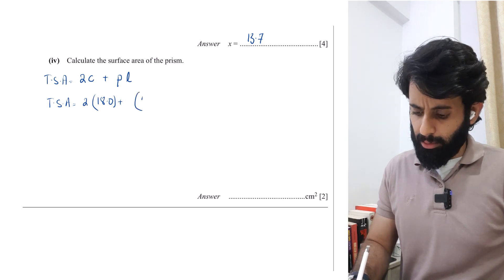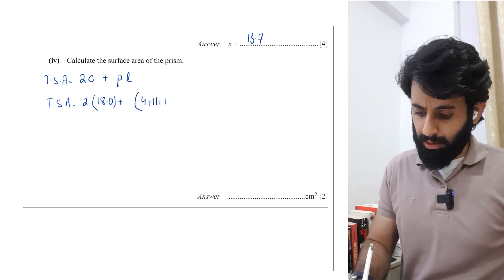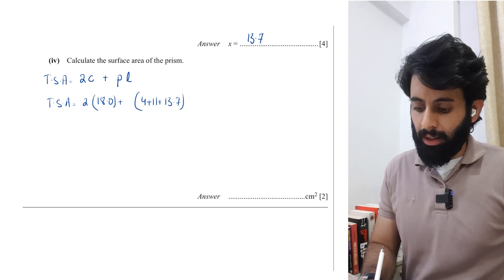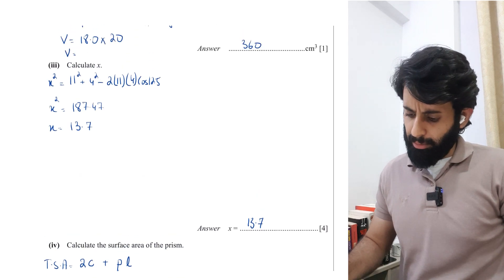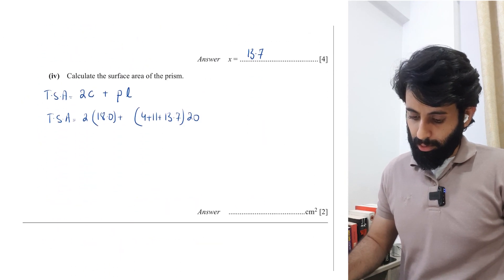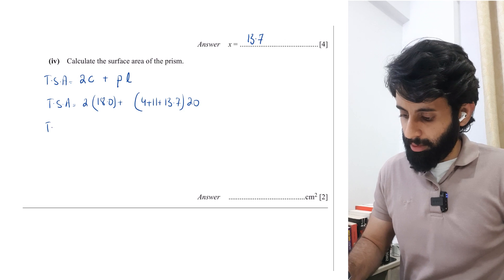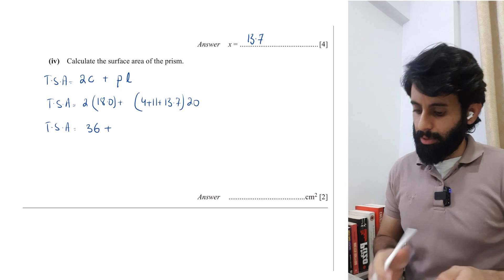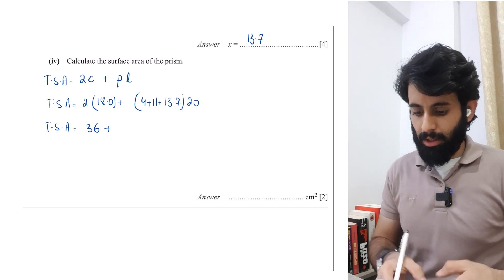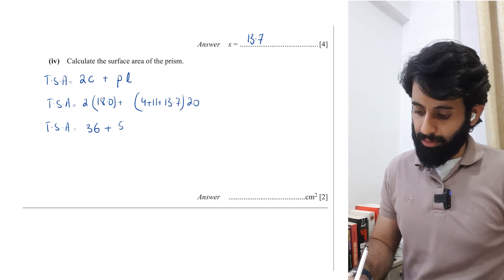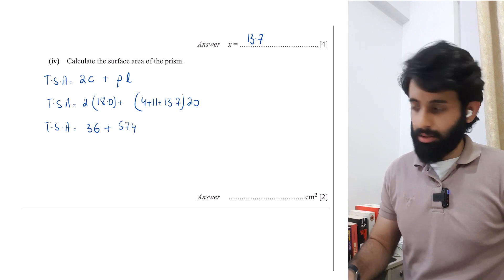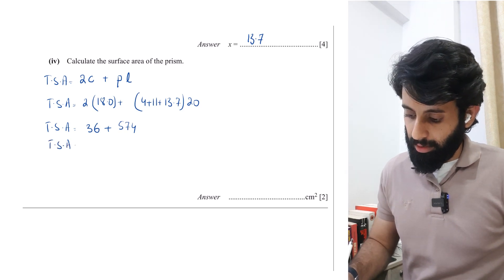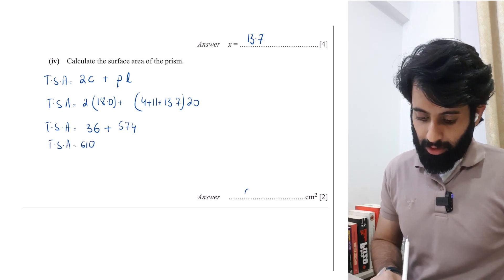The total surface area equals 2 times 18.0 plus the perimeter. For the perimeter, all you got to do is 4 plus 11 plus 13.7, that's 13.7 the third length we just figured out, multiplied by the length which is 20. So 2 times 18.2 is 36 plus let's work this out, 4 plus 11 plus 13.7 times 20, that's 574. Let's add 36 to it, so 610, which falls inside the acceptable range. Total surface area equals 610 centimeter squared.